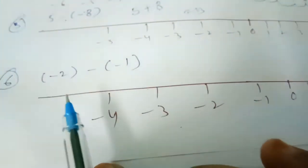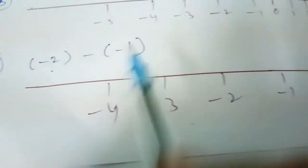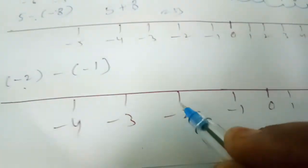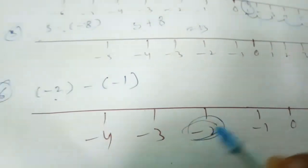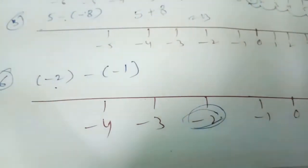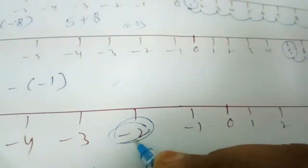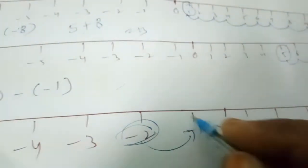Next is minus 2 minus minus 1. Where is minus 2? Here. Minus into minus will be plus 1. Whenever we add, we move to the right. So we move just one time. Our final answer is minus 1.